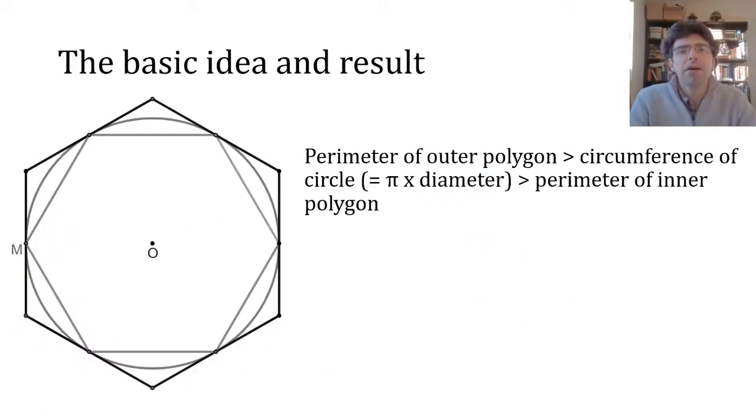So the basic idea is to sandwich a circle in between two regular polygons, one inscribed in the circle and one circumscribed around it. And then the circumference of the circle, pi times its diameter, is going to be between the perimeters of those two polygons.